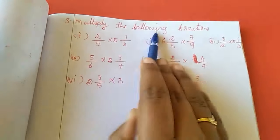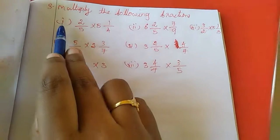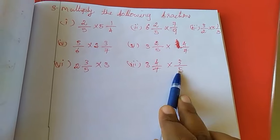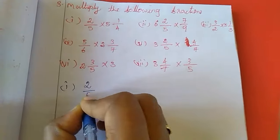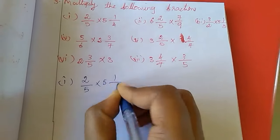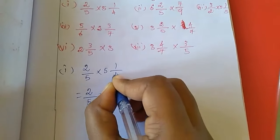Third sum: multiply the following fractions. Here also they are telling you have to multiply. So here also I am doing first sum and last sum, balance is homework for you. First sum is 2/5 into 5 and 1/4.